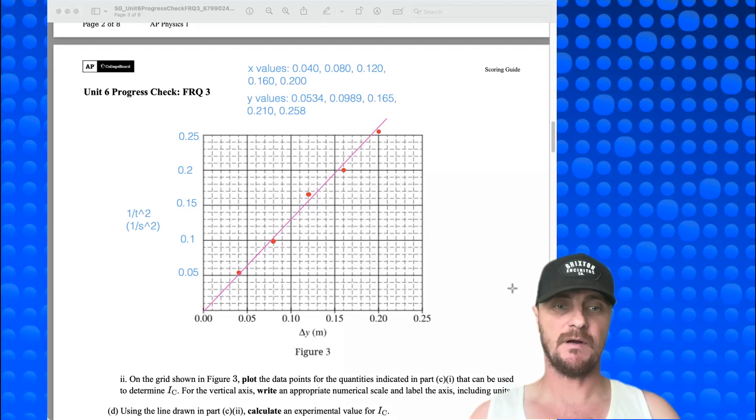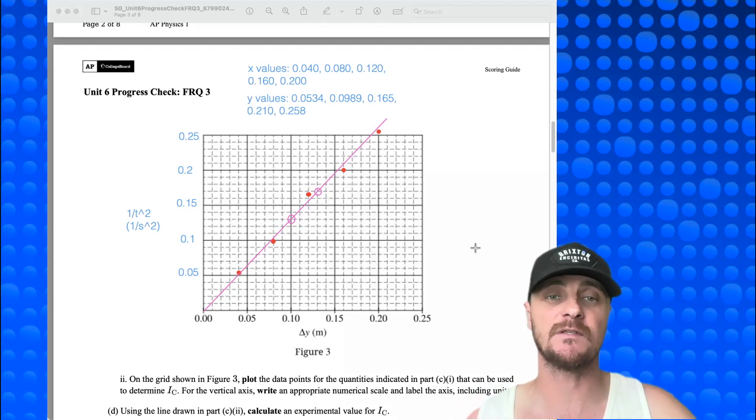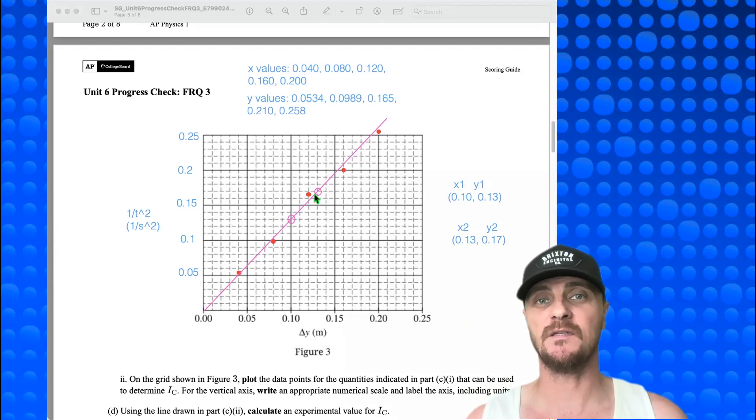Now in part d, I can see right here, it says using this line that I just drew, calculate an experimental value for i sub c. Before I can do that, I need to find two perfect intersection points of my average line with the graph paper. And I found one. There it is right there. And I found the other one. And there it is right there. Those are pretty close to being perfect intersection points. I'm going to write that ordered pair right now. Okay. And there's my ordered pairs that go along with those two points that I selected. Let's go on to part d.